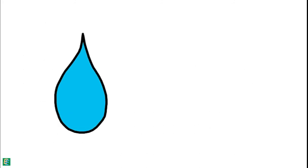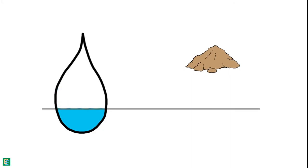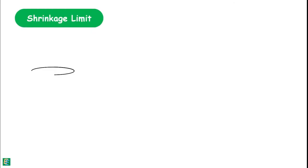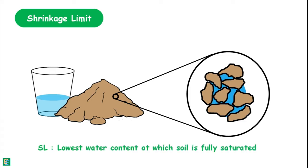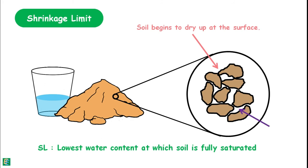When the water content of a soil is reduced and at a particular water content the soil stops shrinking, that water content is called the shrinkage limit. Shrinkage limit can also be defined as the lowest water content at which the soil is fully saturated, because if we reduce the water content below this limit, soil begins to dry at the surface, its color begins to change, air enters the voids, and the soil is no longer fully saturated.